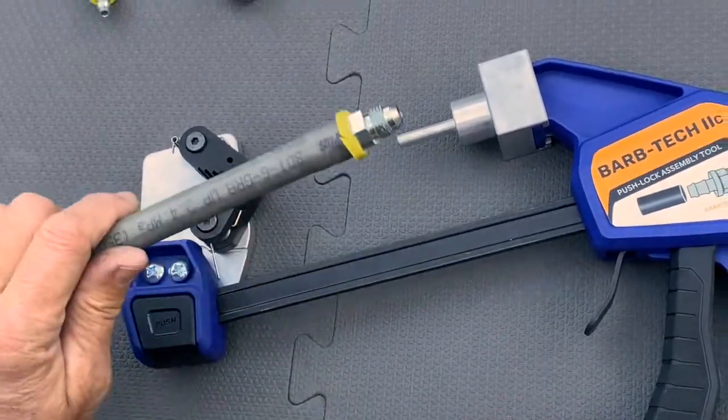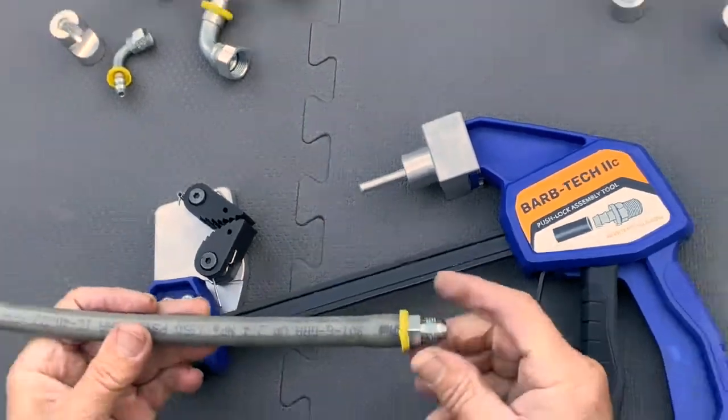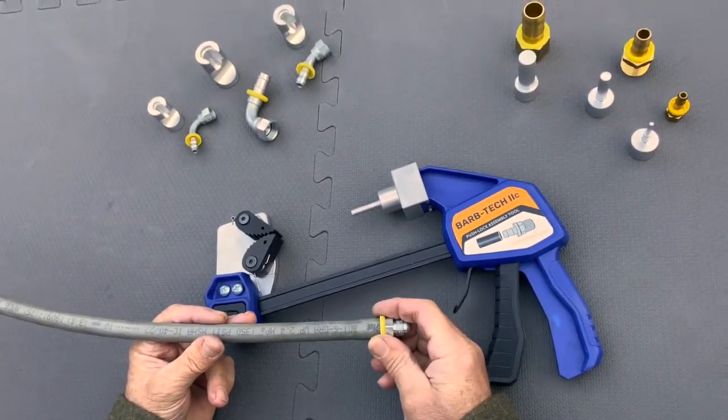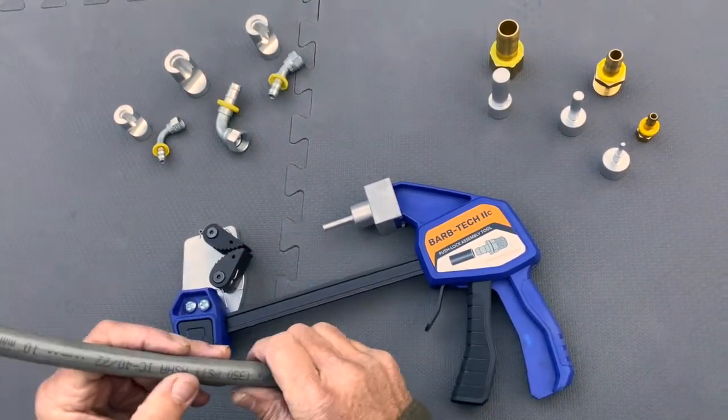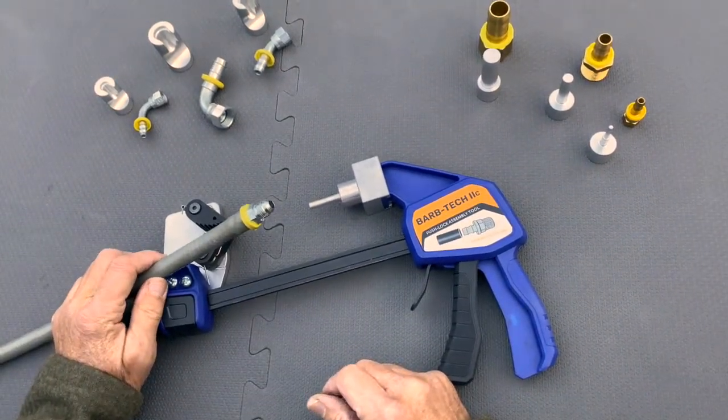This saves a lot of work for your hands versus trying to push the hose onto fittings when they can slip out or on a hard surface. We take the push out of push lock.